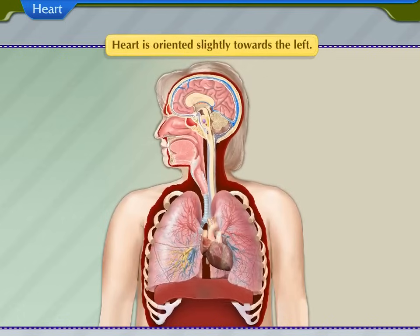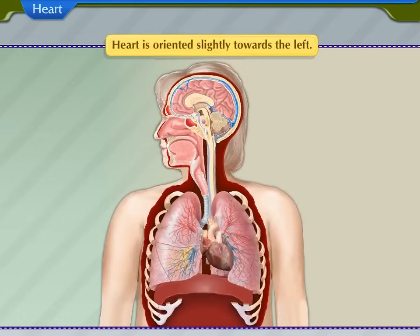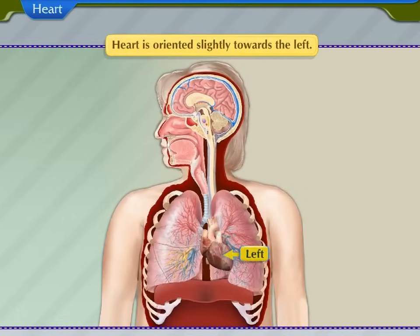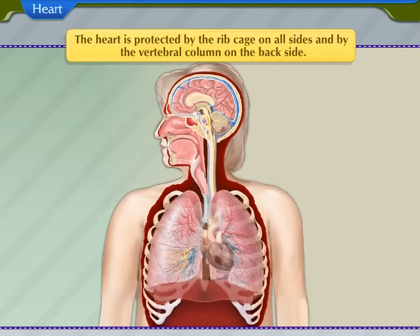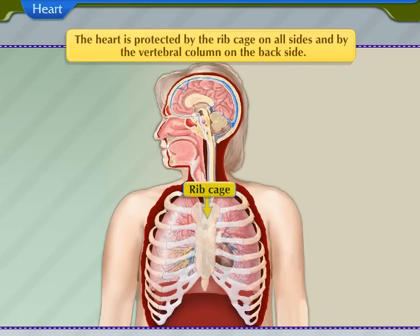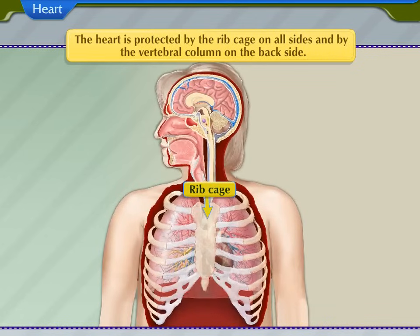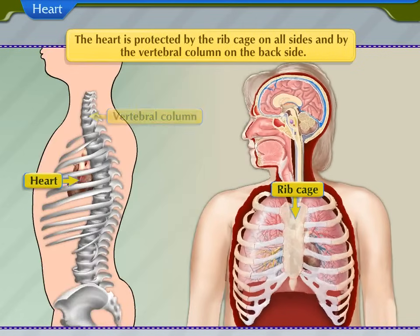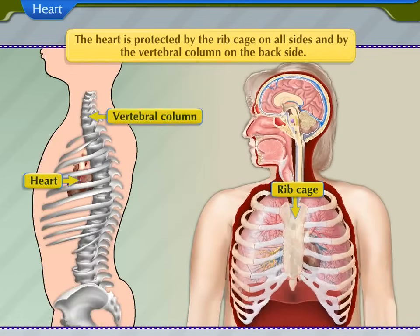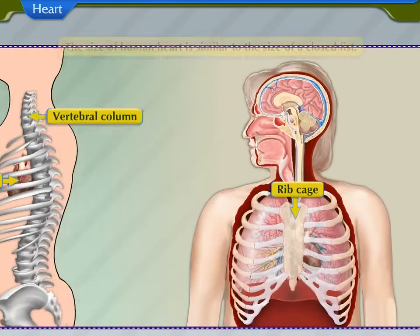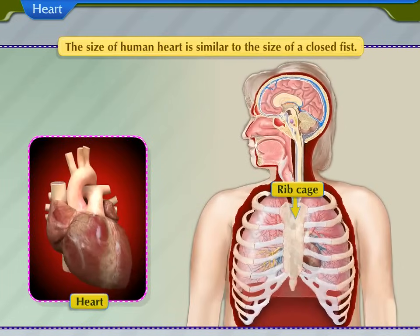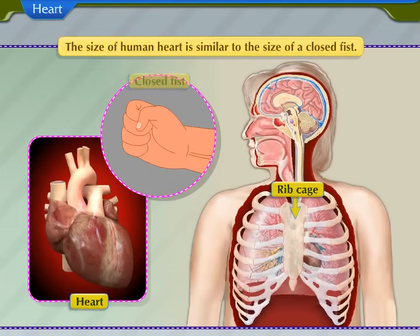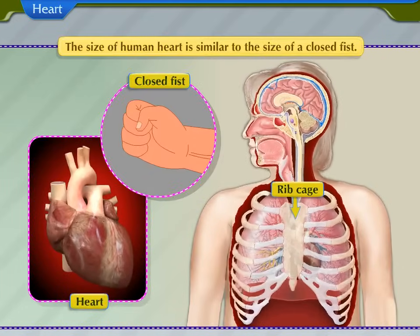It is oriented slightly towards the left. The heart is protected by the ribcage on all sides and by the vertebral column on the back side. The size of the human heart is similar to the size of a closed fist.